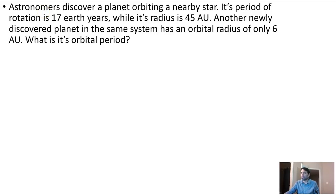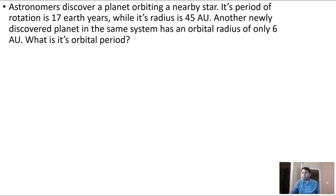Astronomers discover a planet orbiting nearby a star. Its period of rotation is 17 Earth years while its radius is 45 AU. AU stands for astronomical unit — it's a unit of measure for things that are really far away. Technically, an AU is the average distance from the Sun to the Earth. This problem is talking about period and radius, so we're going to look at the equations we derived in class.